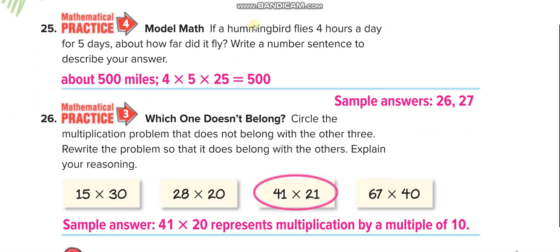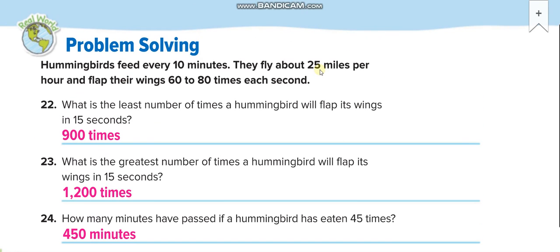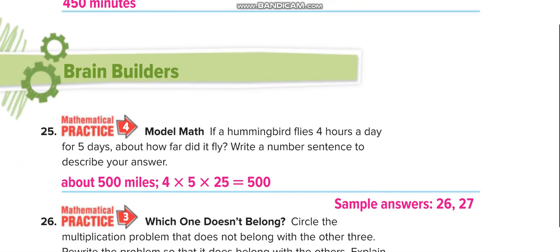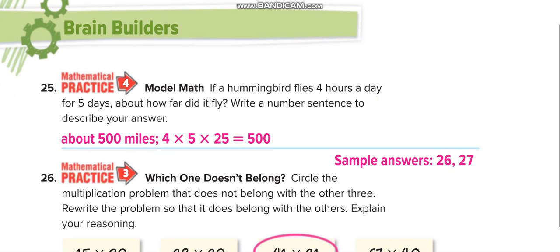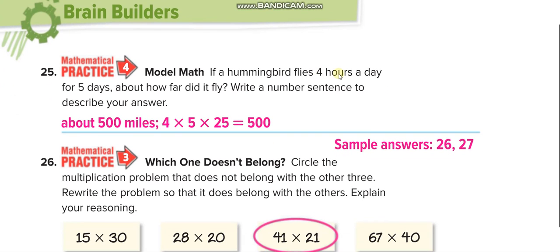If a hummingbird flies 4 hours a day for 5 days, about how far did it fly? So their speed is 25 miles per hour. So in 1 hour, they fly 25 miles. In 4 hours, 25 times 4, 100. And in 5 days, 100 times 5, 500 miles.